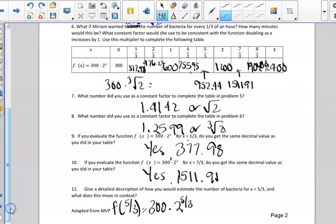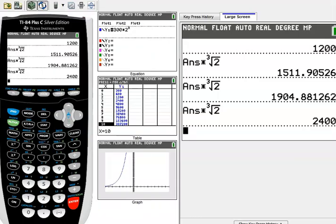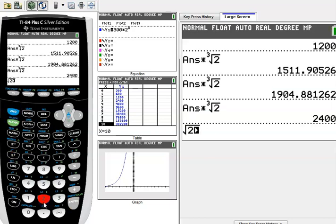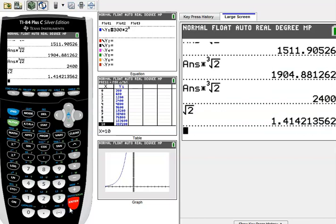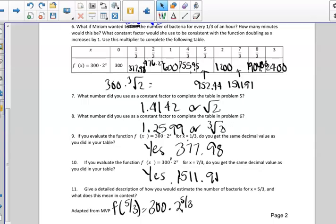Okay, so now in number seven, we were asked, what was the constant factor that we used in number five, and we determined that was the square root of two. We also had some students guess and check, so if you take a look at the square root of two, the square root of two is approximately 1.41, and some students used that number to approximate the next number in the table. And then on number eight, what did we use,